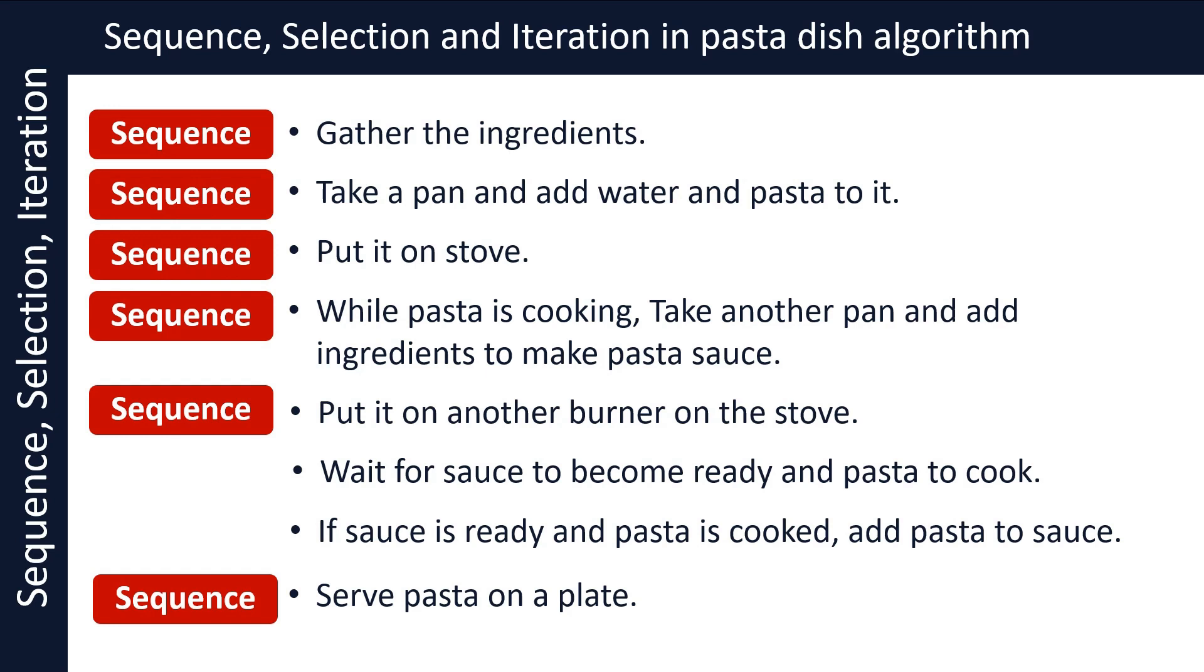Wait for sauce to become ready and pasta to cook shows us use of the iterative construct. Here the process of sauce getting ready or pasta getting cooked are repetitive steps. Basically, we are constantly checking if sauce is ready or pasta is boiled or not.